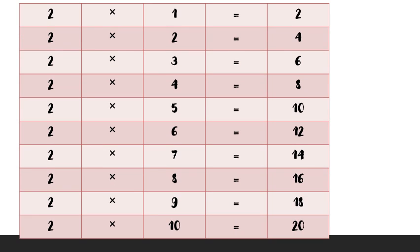Now let's revise the whole table again. 2 ones are 2, 2 twos are 4, 2 threes are 6, 2 fours are 8, 2 fives are 10, 2 sixes are 12, 2 sevens are 14, 2 eights are 16, 2 nines are 18, 2 tens are 20.